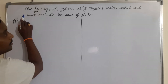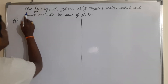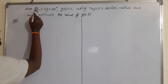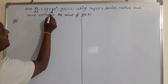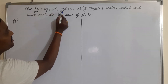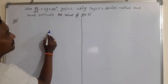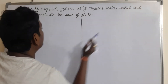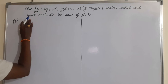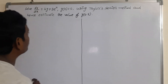This is another example on Taylor series method. Solve dy/dx equal to 2y plus 3 times e^x, with initial condition y(0) = 0, using Taylor series method, and hence estimate the value of y(0.2).